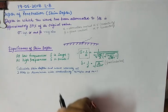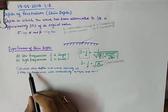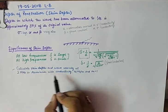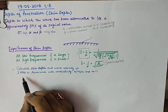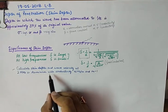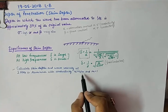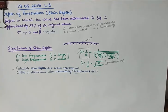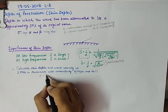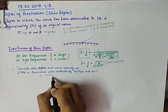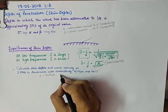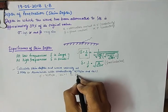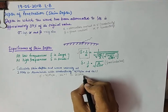So, now I will like to take up one numerical where it is being asked to find the skin depth and wave velocity at 2 MHz in aluminum. Conductivity is given, and mu R is given. So, I will say sigma is 40, mu R is 1, and the frequency is 2 into 10 raised to the power 6 Hz.